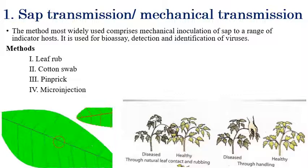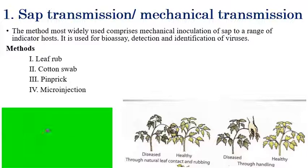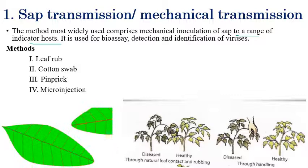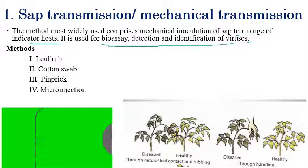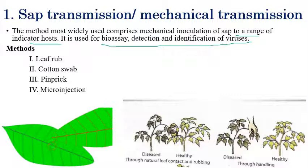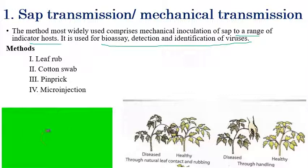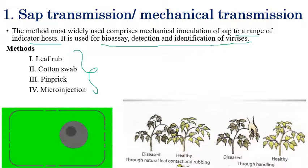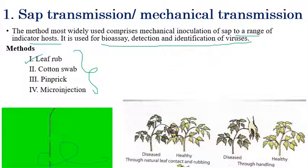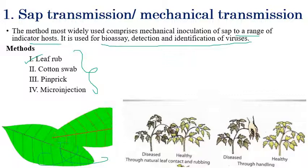The first method is sap transmission or mechanical transmission, which is the most widely used method involving mechanical inoculation of sap to a range of host plants. This technique is mostly employed in the laboratory for bioassays or for detecting and identifying different types of plant viruses. It serves as a model transmission method to understand how plant viruses are transmitted from infected to uninfected plants. Methods include the leaf rub method, where rubbing an infected plant onto a non-infected plant transmits the virus.